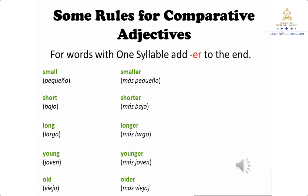Miren que fácil. Tenemos nuestro primer ejemplo: small, significa pequeño, es una sola sílaba. Si agregamos 'er' al final nos queda smaller — más pequeño. Short, bajo, es una sola sílaba. Aplicamos la primera regla — 'er' al final — y nos queda shorter, más bajo. Long, largo — longer, más largo. Young, joven — aplicamos la primera regla, 'er' al final — younger, más joven.